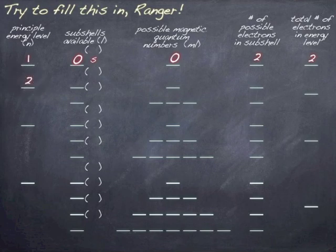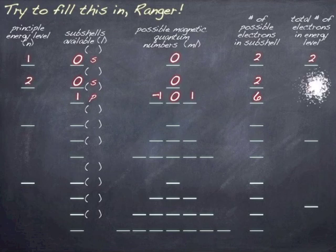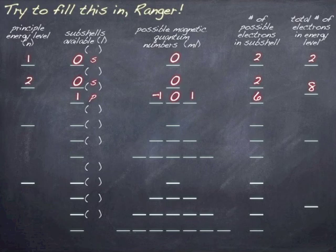Now, on the second energy level, you can have an S and a P. And so that means that you can have an address of zero for the S, and then the P has three possible addresses, negative one, zero, and one. The S orbital can hold two, but the P subshell can hold six, because it has three orbitals each that can hold two, and that's why you have eight electrons there. So I'll go ahead and pause the video and see if you can fill out the rest of the chart here.